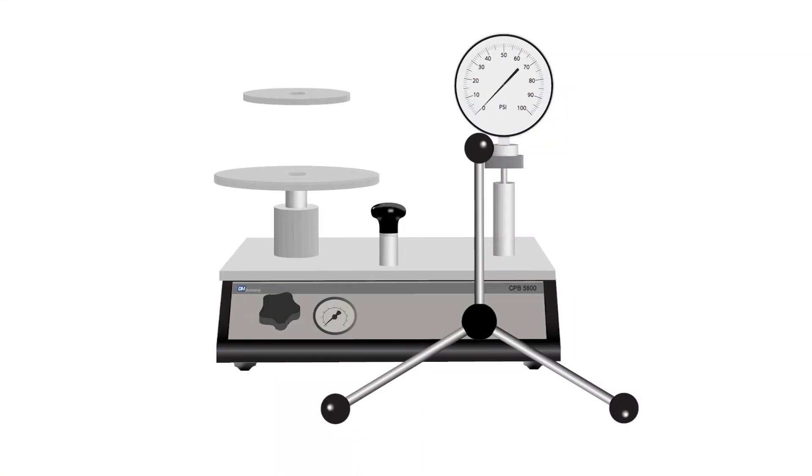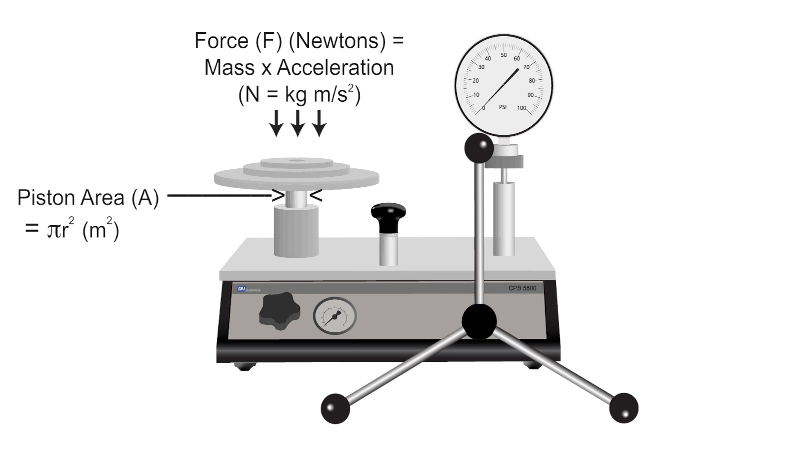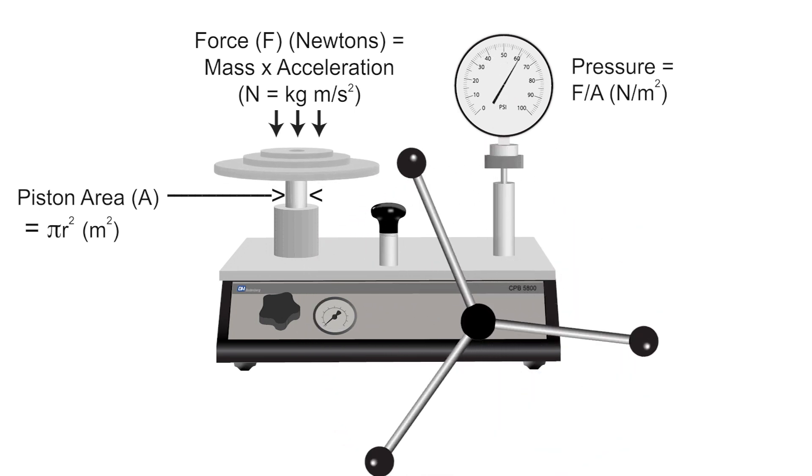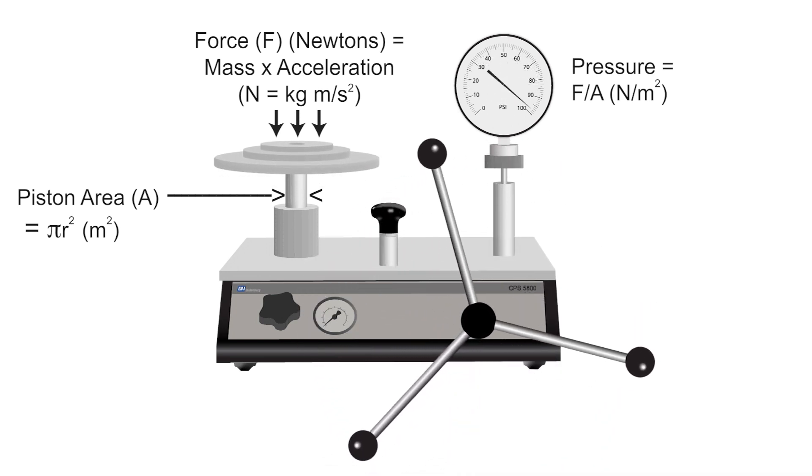By generating force using weights on a precisely machined piston, a deadweight tester provides the highest level of stability and accuracy as a percent of reading across a wide pressure range. As the measurements are based on the primary units of mass, length and time, a deadweight tester qualifies as a true primary standard.